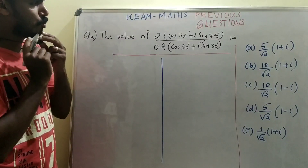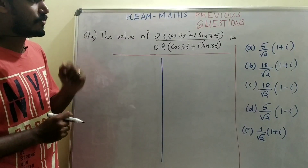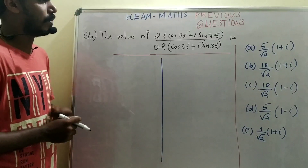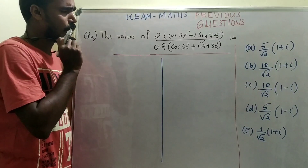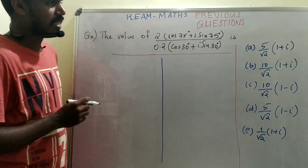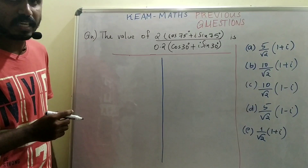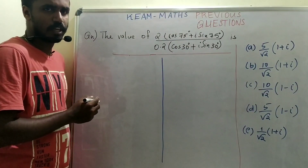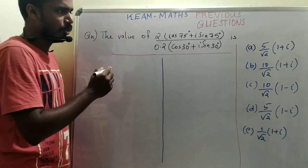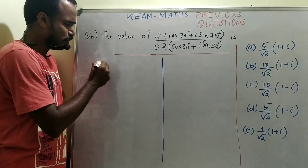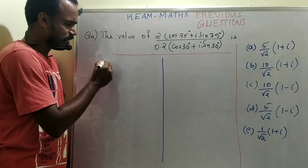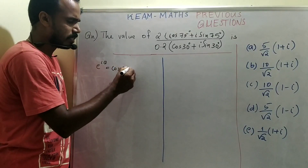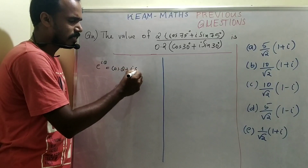The value of 2(cos75° + i·sin75°) divided by 0.2(cos30° + i·sin30°). The value of 2 is equal to cos75° + i·sin75°.